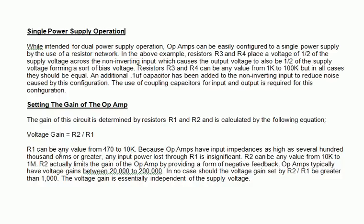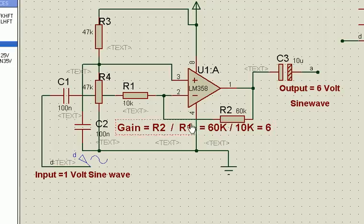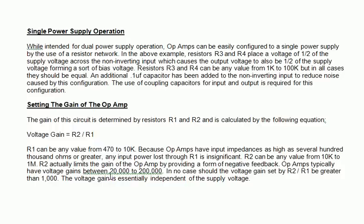R1 can be any value from 470 to 10k, but op-amps have input impedance as high as several hundred thousand ohms or greater. Any input power lost through R1 is insignificant. R2 can be any value from 10k to 1 megaohm. This is the feedback resistor.